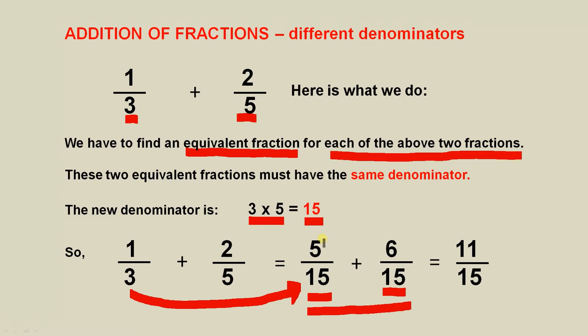Now we are allowed to add the two numerators together. 5 plus 6 equals 11 and we keep the same denominator. So the answer is 11 over 15.